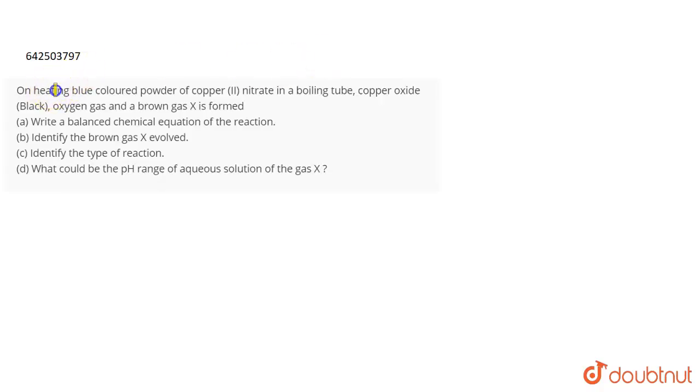The question is on heating blue colored powder of copper nitrate in a boiling tube. Copper oxide which is black, oxygen gas and a brown gas X is formed.